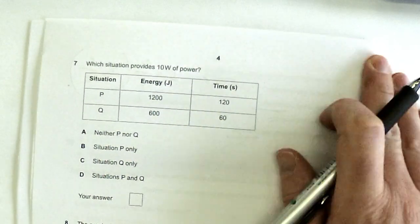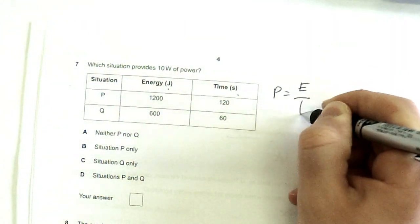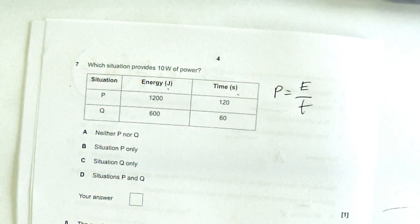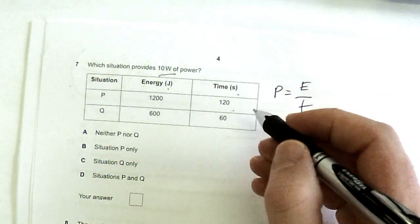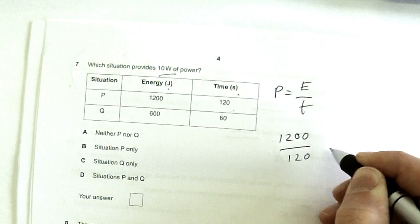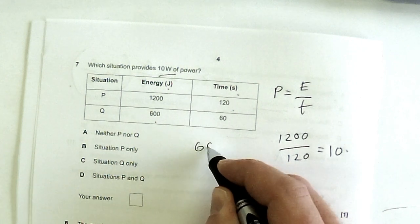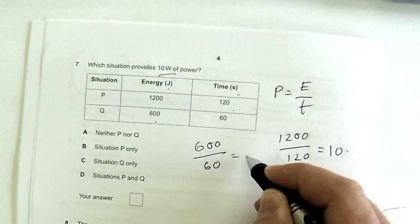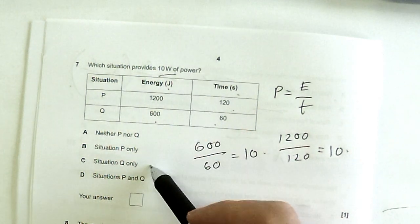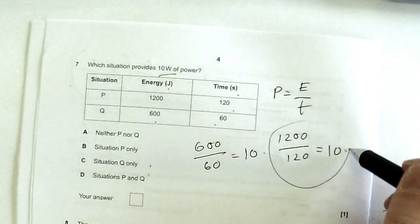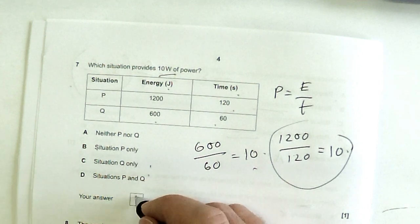Which situation provides 10 watts of power? We've got to remember the equation that links power, energy, and time. To do this question, power is energy over time. So all I really need to do then is work out which one of these gives me 10 watts. So 1,200 divided by 120 gives me 10, so it's going to be P. What about Q? 600 divided by 60 also is 10. So both situations do that. Here's why we should always make sure we answer the question fully before we look through the answers. Because if I'd have just done that bit and not bothered to try that, then I would have picked B. But it's clearly not B, it's both situations. D.